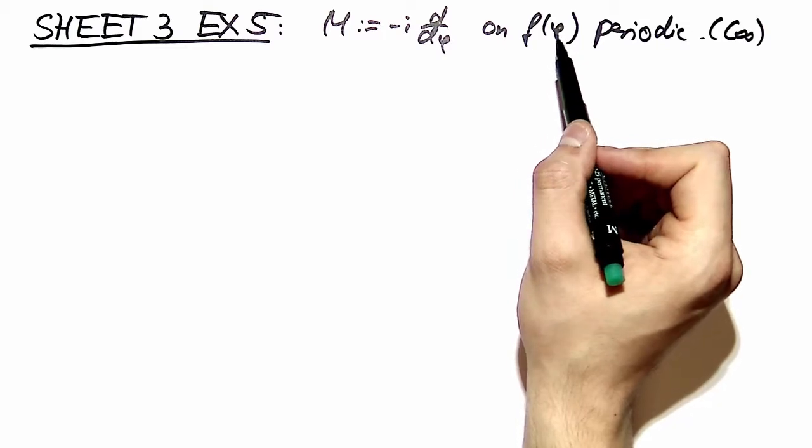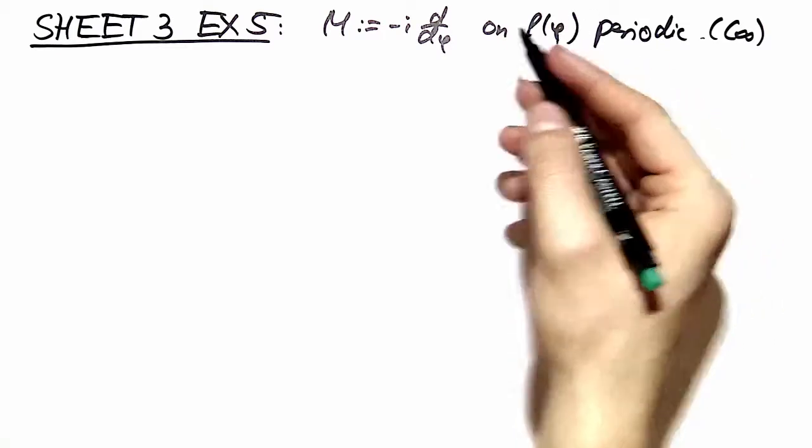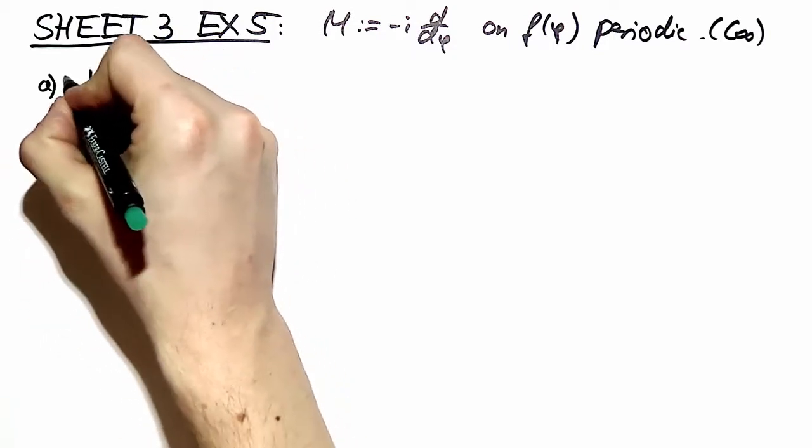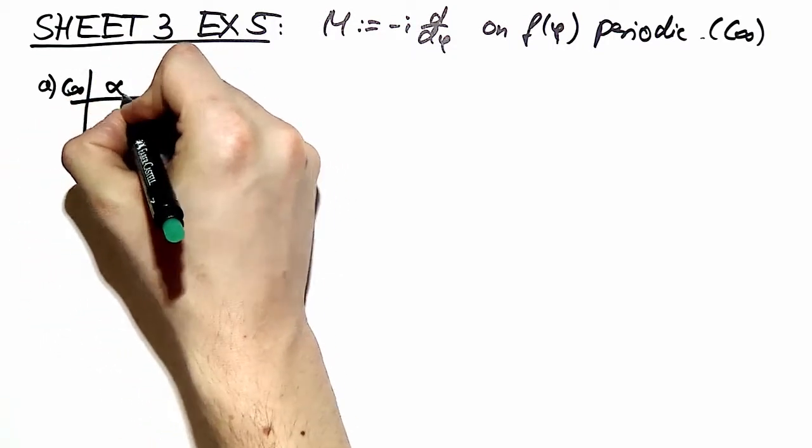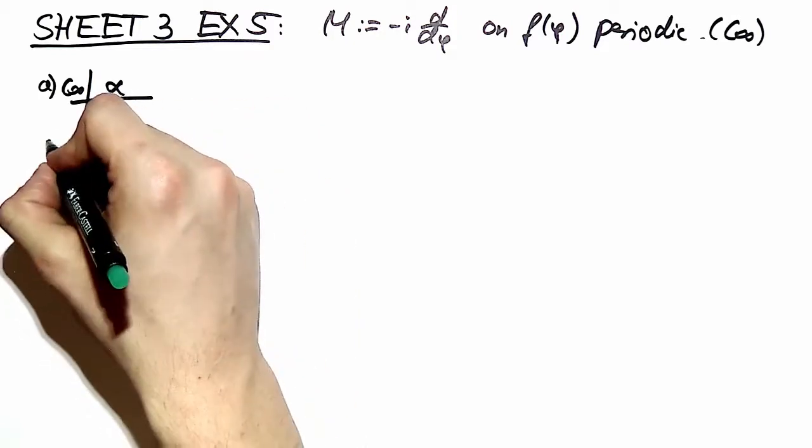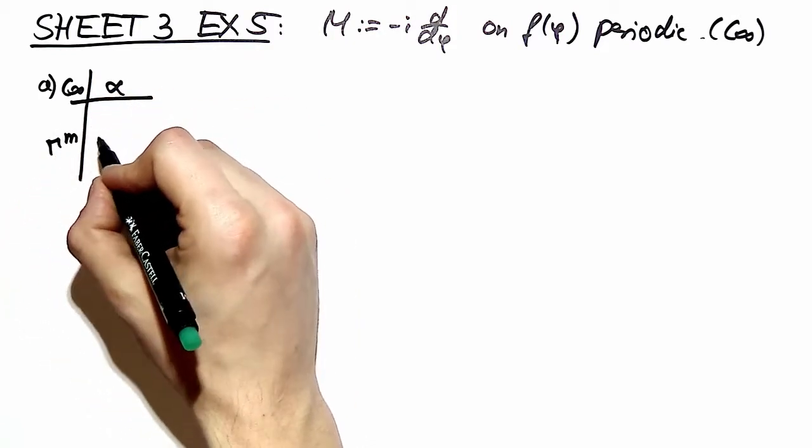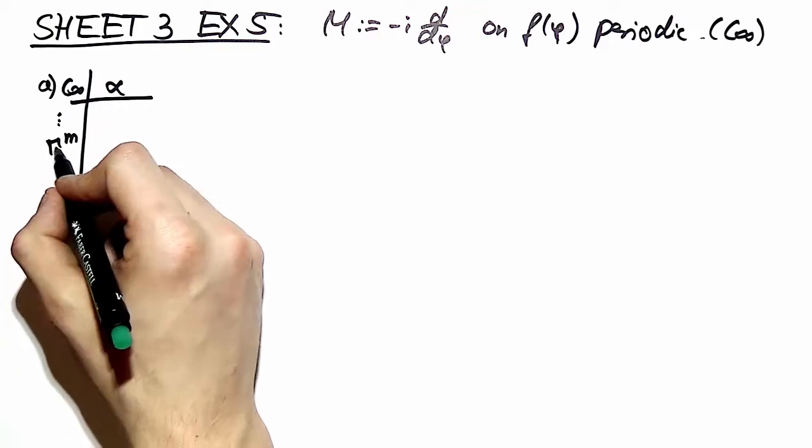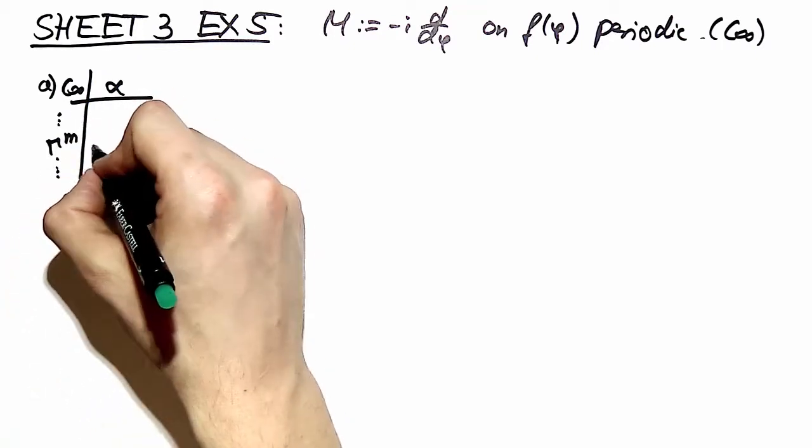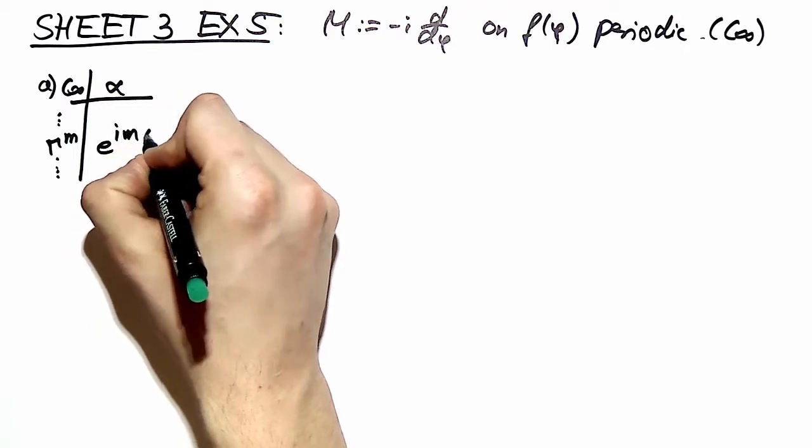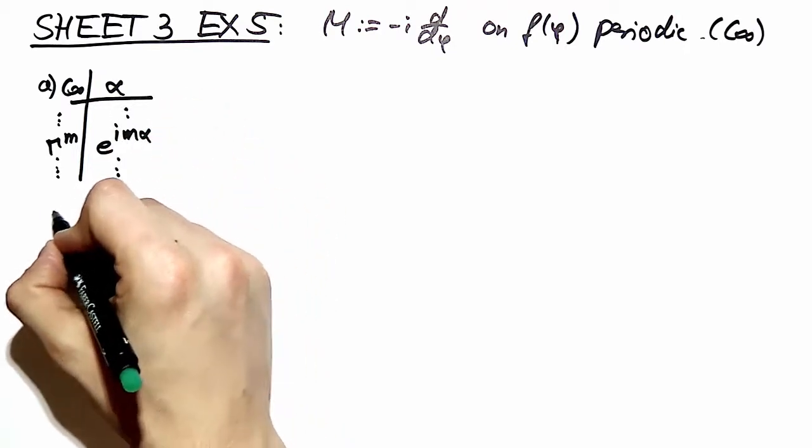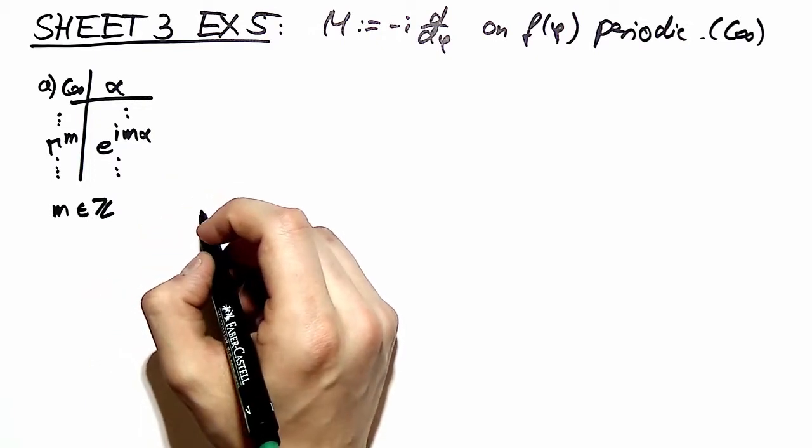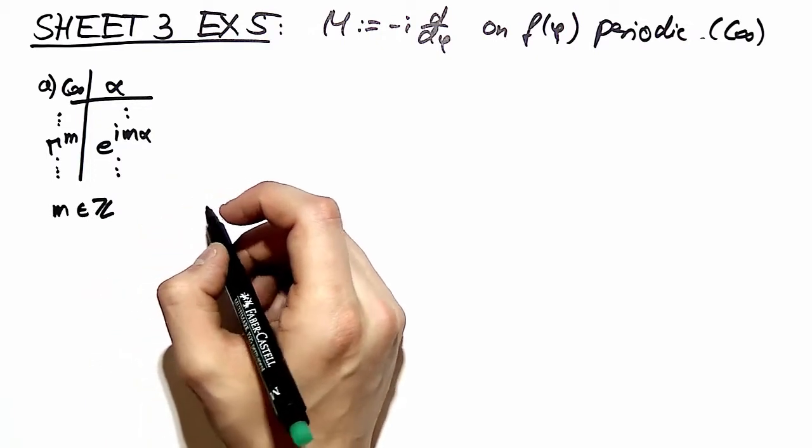So when you look back at exercise number 4, you recognize that the first thing we do is construct a character table of c infinity. We have that one parameter alpha and transferring our knowledge from exercise number 4 to this exercise yields for the representation gamma m an acquired phase of e to the i m alpha. m is of course in the whole numbers and m equals 0 gives the identity representation.